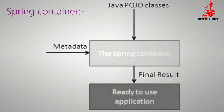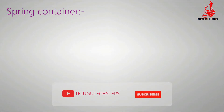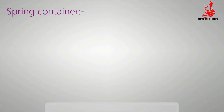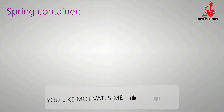The following diagram represents a high-level view of how Spring works. In this diagram, the Spring Container takes your Java POJO classes and configuration metadata, and from those two inputs it produces a fully configured and executable application for the end user.